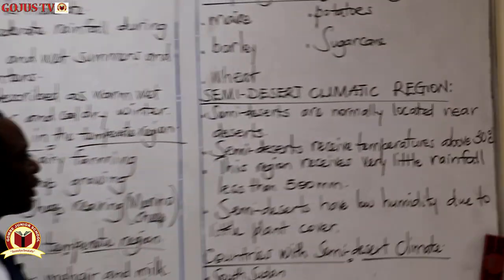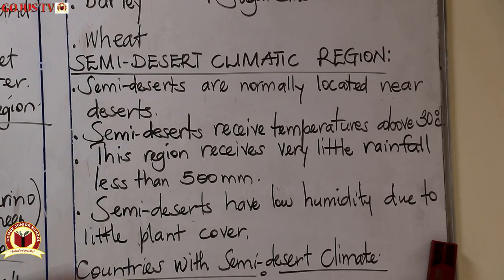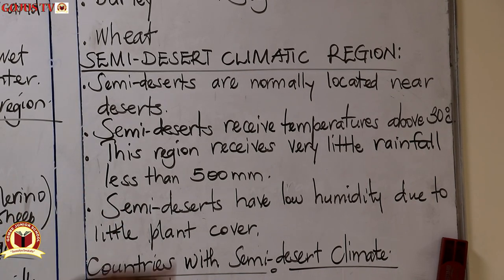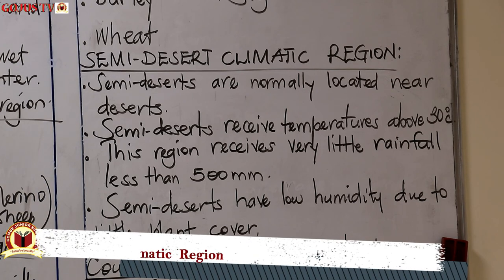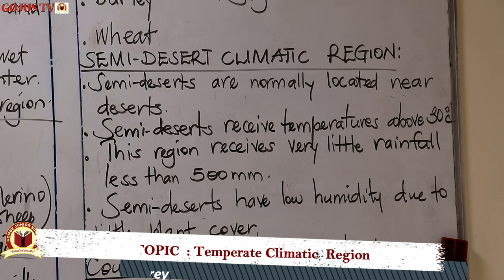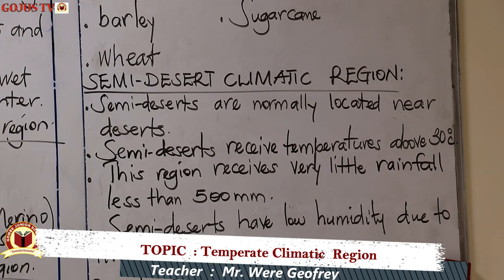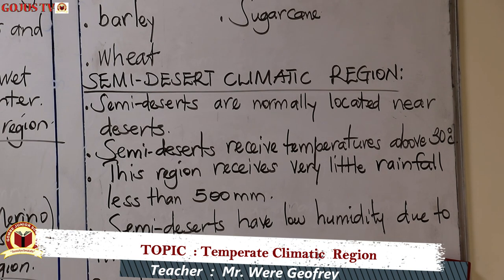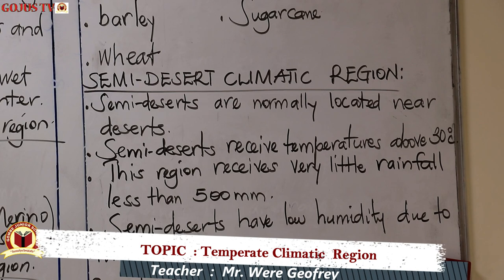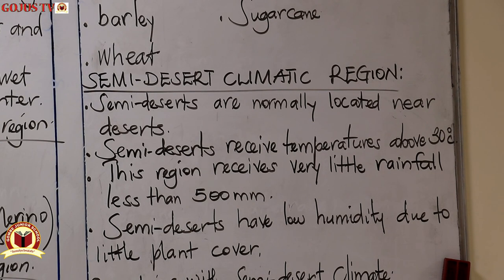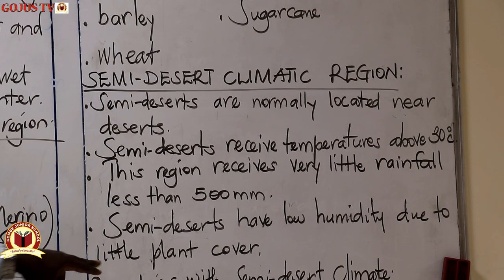Now let us look at the semi-desert climate region. Semi-deserts are normally located near deserts. When you look at the Sahara Desert, that area near it has this climate region. When you look at the Namib Desert and the Kalahari Desert, those areas around those deserts experience this semi-desert climate. This area receives very little rainfall — less than 500 millimeters. Semi-deserts have low humidity due to little plant cover.